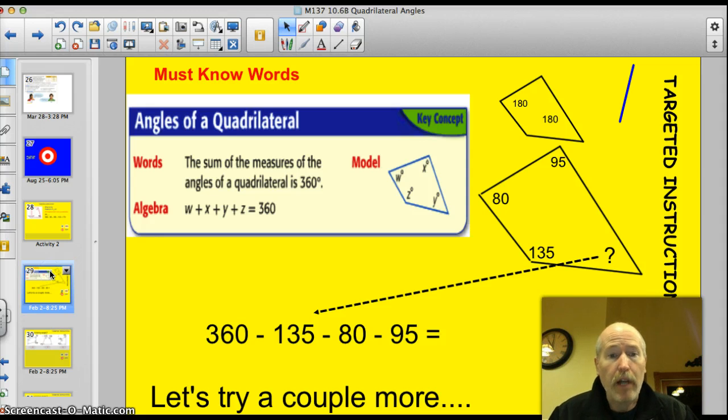That's going to be the lesson for tonight in a nutshell. Here we go. Angles of quadrilateral. Very simple. Here's the algebraic expression: w plus x plus y plus z equals 360 degrees. All these angles will add up to 360.